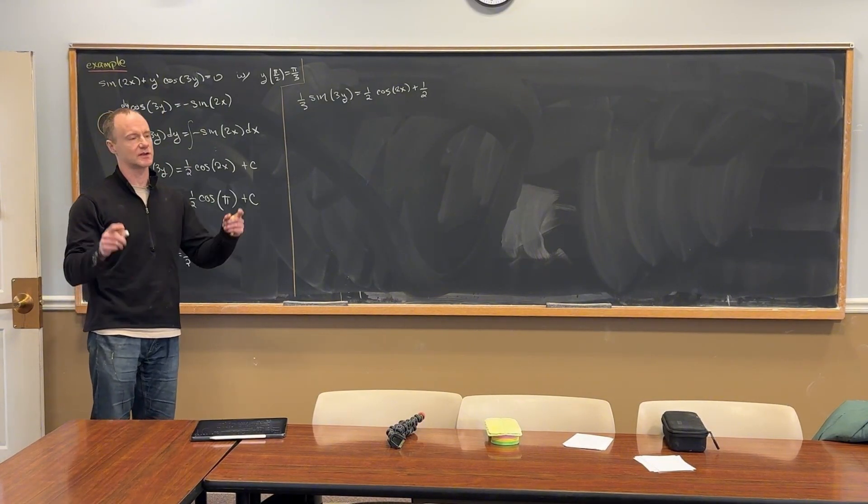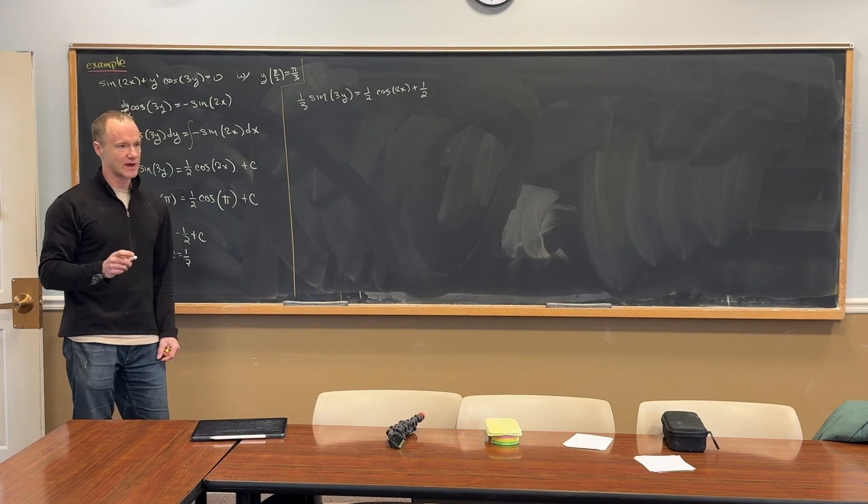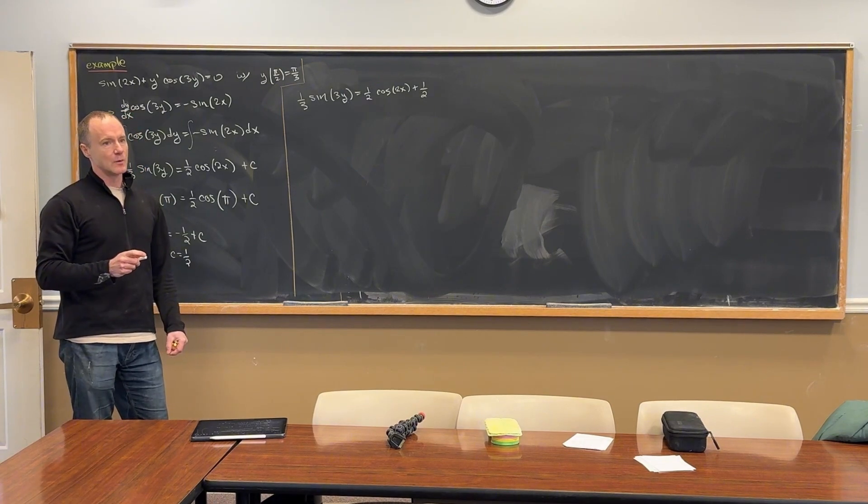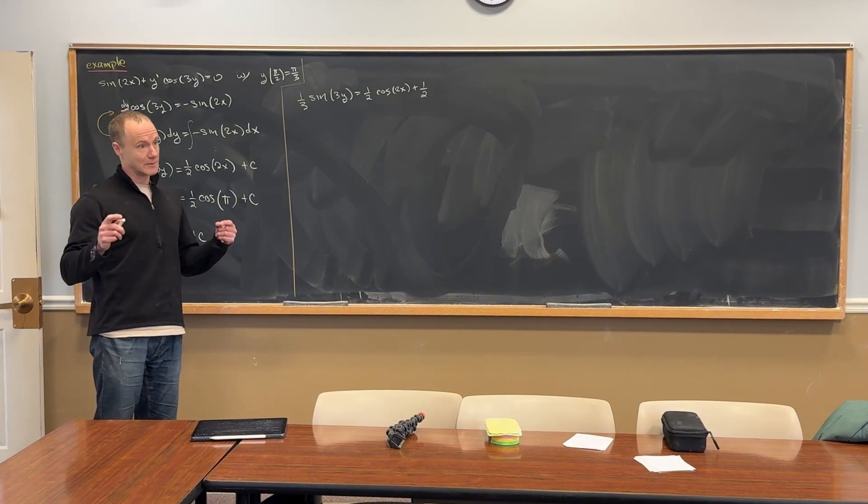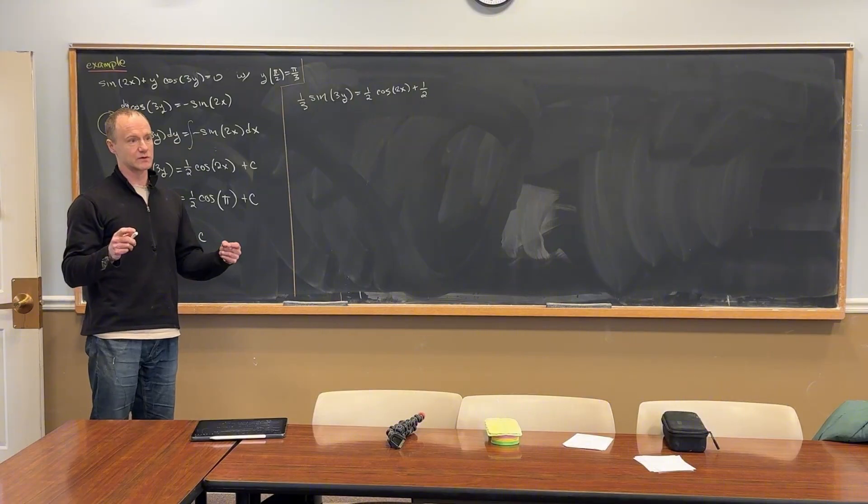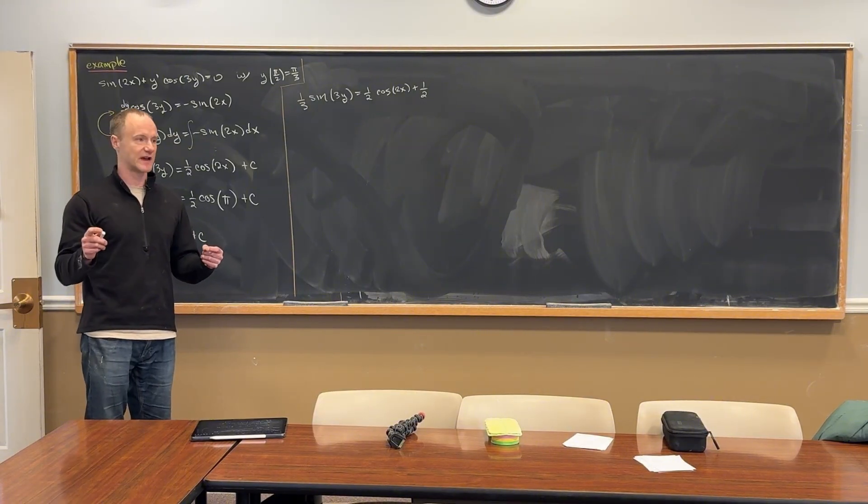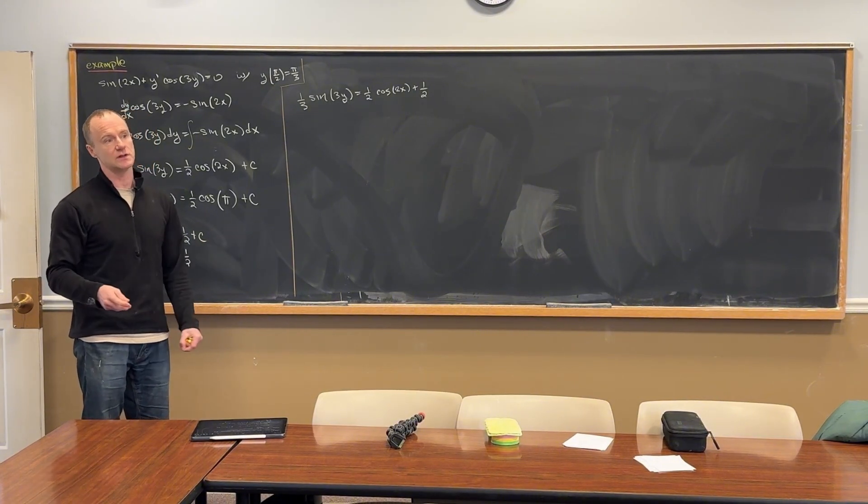Like, I think in this case we can solve for y, although as we'll see later, especially when we do these things called exact differential equations, often we leave our solution in implicit form. In other words, we don't solve for y in terms of x because sometimes it's not possible to do that.